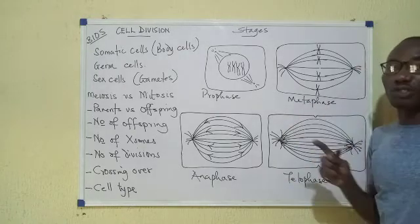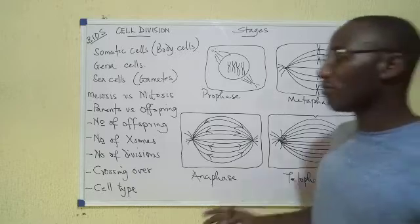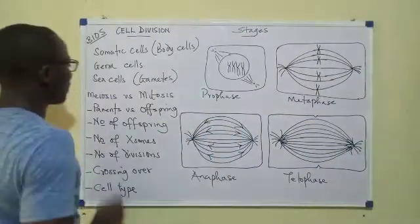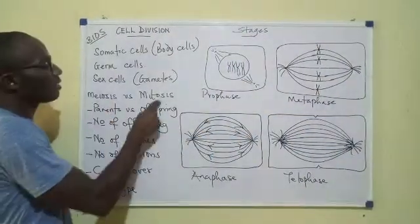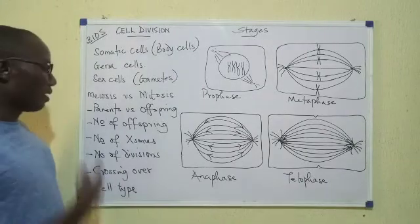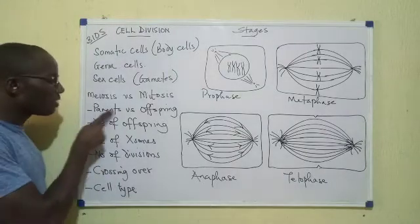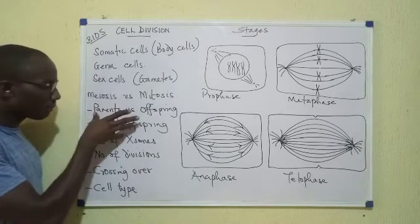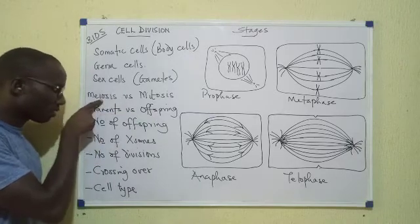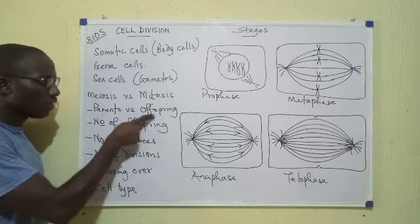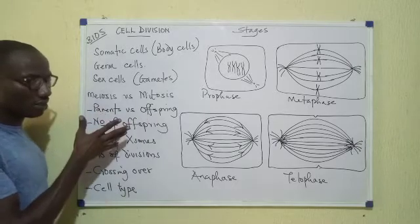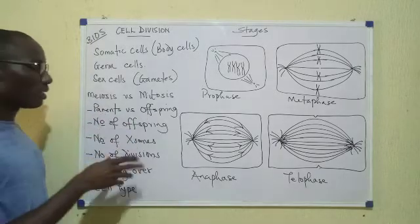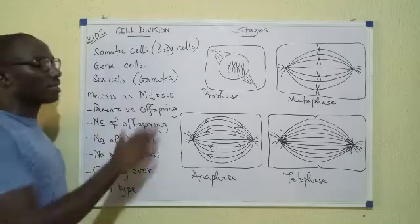Now I'll tell you how to identify those four stages in diagrams. But first, what are the differences between meiosis and mitosis? First, parents versus offspring - do they resemble each other? In meiosis, the parents and the offspring are different, there's some variation between them. In mitosis, they're exactly the same.